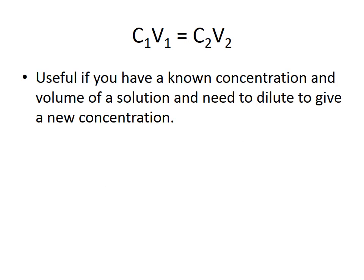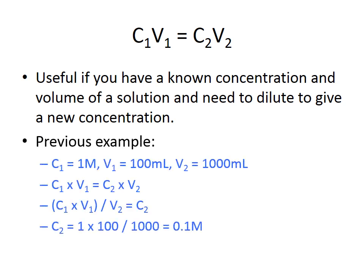An equation many of you will have come across is C1V1 = C2V2, which is useful when you have a known concentration and volume and need to dilute to a new concentration. Using our sodium chloride example: C1 = 1 molar, V1 = 100 millilitres, V2 = 1000 millilitres. Rearranging gives C2 = C1V1 / V2 = (1 × 100) / 1000 = 0.1 molar.